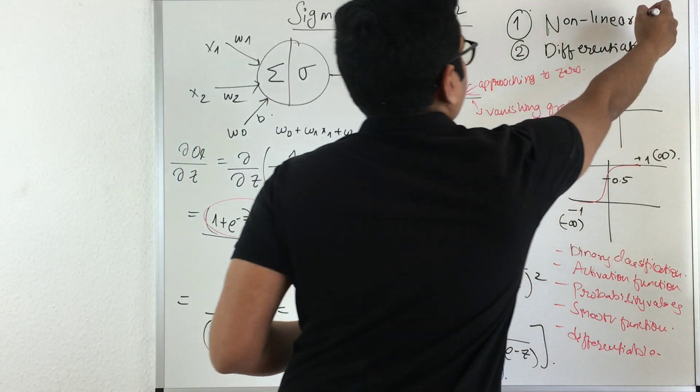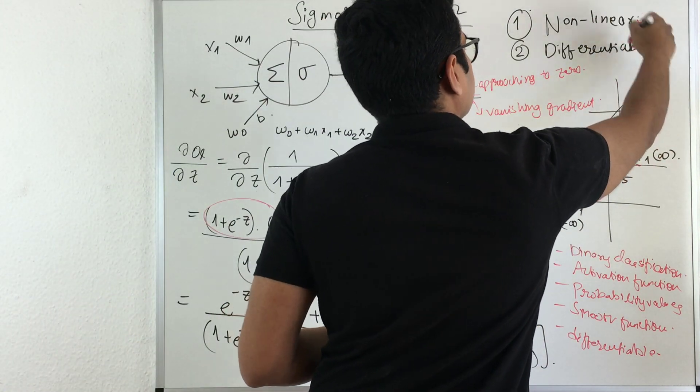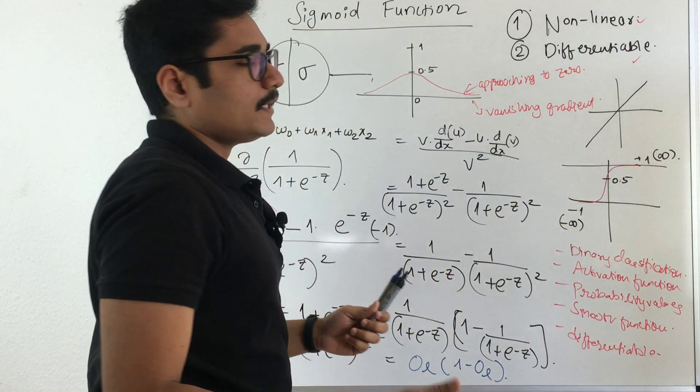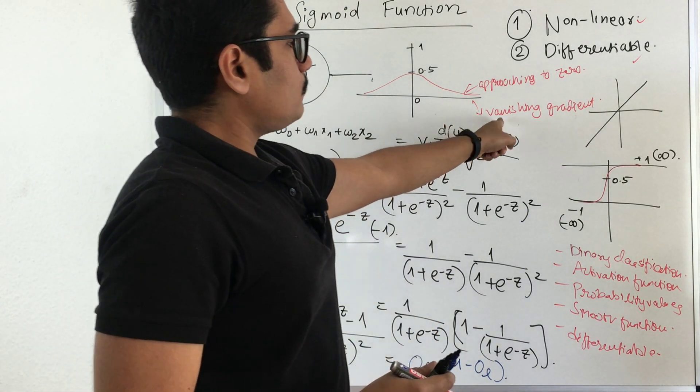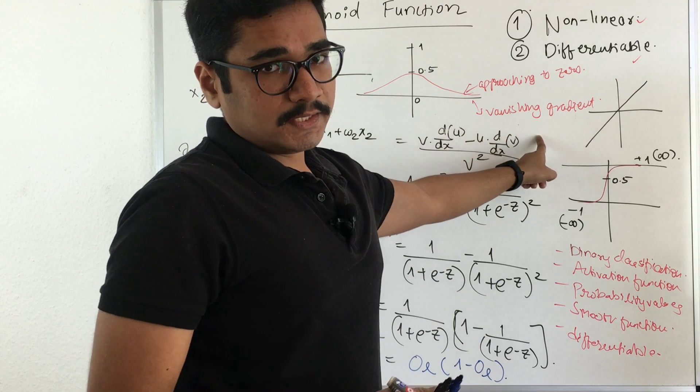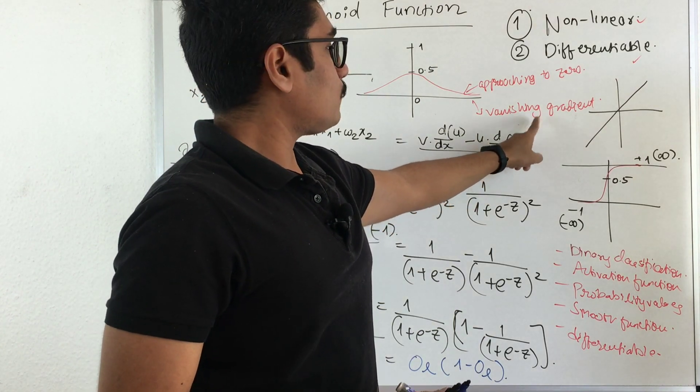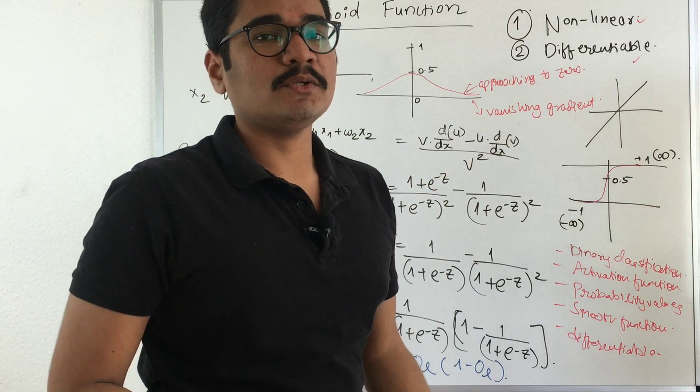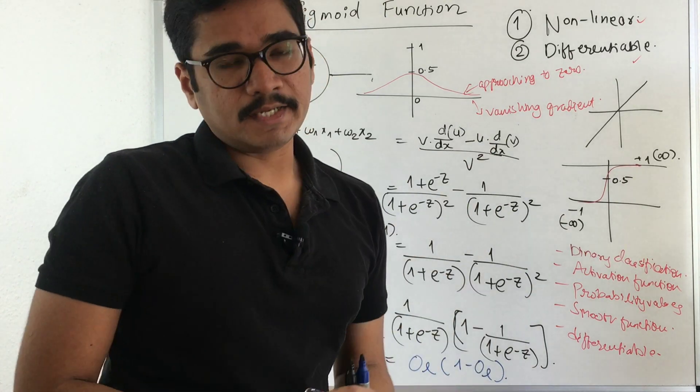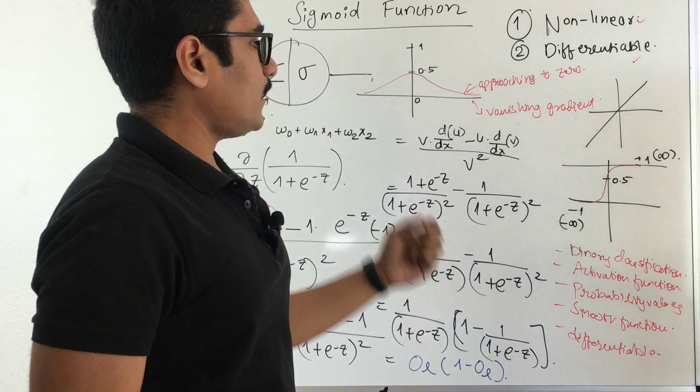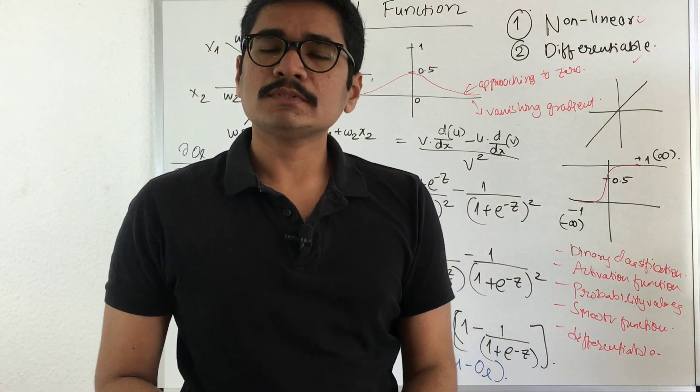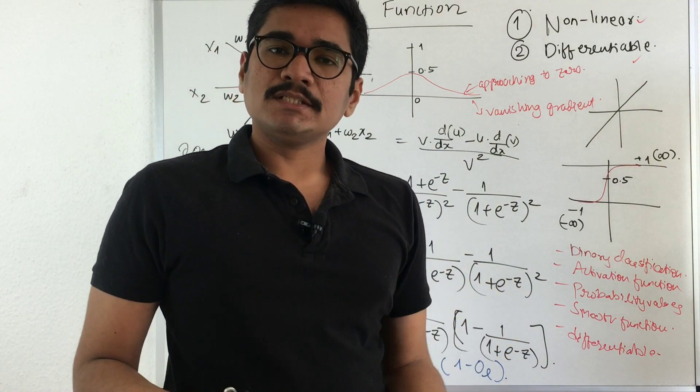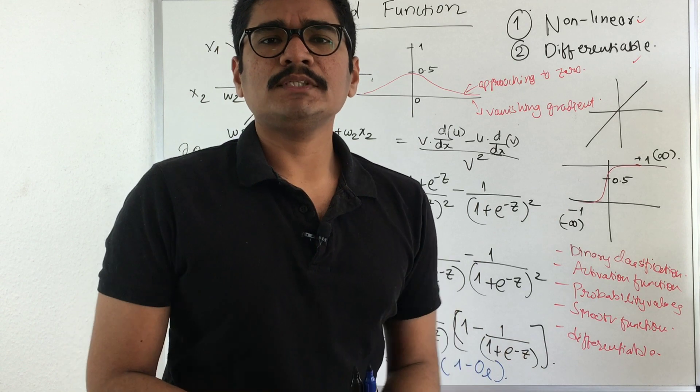It satisfies nonlinearity and is differentiable so you can backtrack to the layers in a neural network, but it will fall victim to vanishing gradient. For vanishing gradient, you don't have any practical solutions till date. That's the reason why we also don't use sigmoid function in certain scenarios.